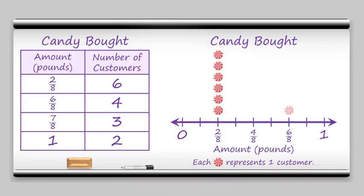Then above six-eighths we need four customers. Seven-eighths is the tick mark right after six-eighths and that needs three customers. And lastly at one pound we have two customers. And voila, we've created a line plot.